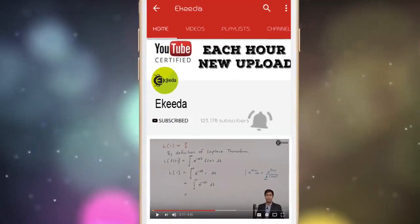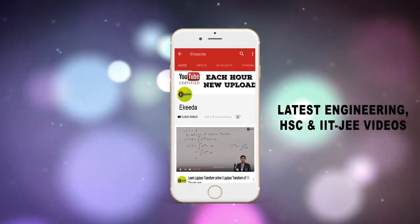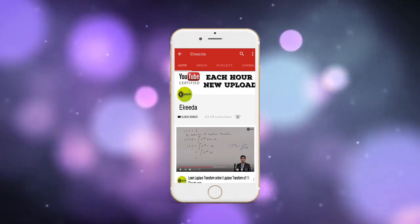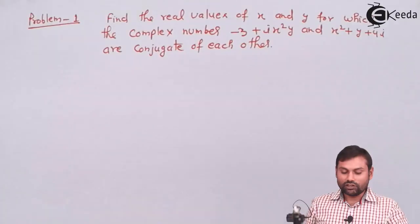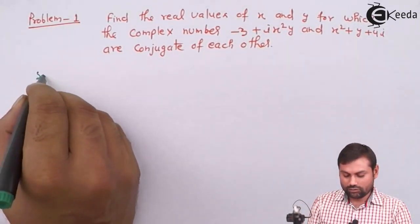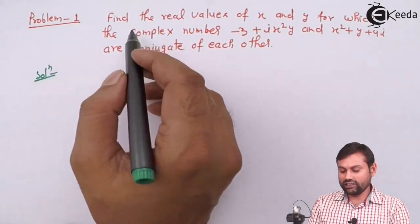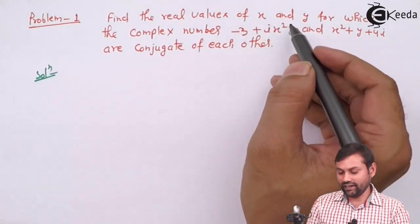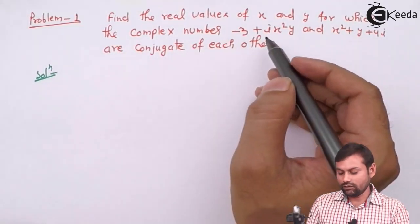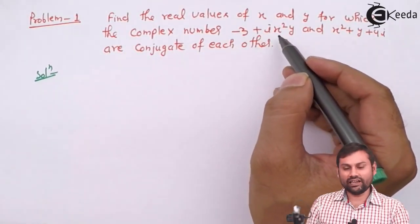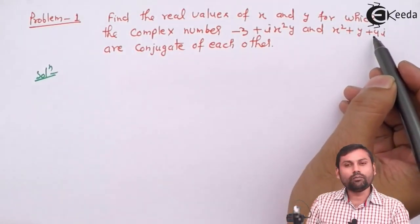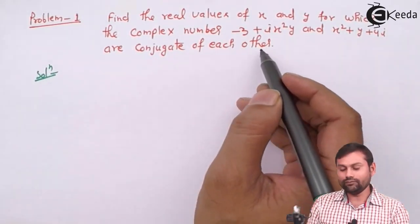Do subscribe to Ikeda channel and press bell icon to get updates about latest engineering, HSE and IITJEE mains and advanced videos. Problem मैंने already लिखा है paper पे — find the real values of x and y for which the complex number minus 3 plus ix²y and x² plus y plus 4i are conjugate of each other.